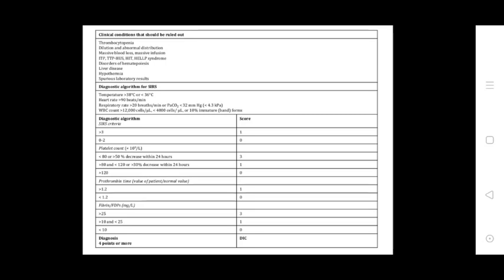Clinical conditions that should be ruled out include thrombocytopenia, dilution, and consumption coagulopathy from massive blood loss or massive transfusion, ITP, TTP, HELLP syndrome, disorders of hemostasis, liver disease, hypothermia, and spurious laboratory results.